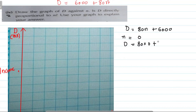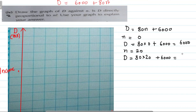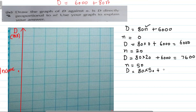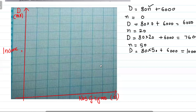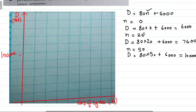So D equals 80N plus 6,000. When N=0, value is 6,000. When N=20, value is 80 times 20 plus 6,000, which equals 7,600. When N=50, value will be 80 times 50 plus 6,000, which equals 10,000. So our values are: N=0 gives 6,000; N=20 gives 7,600; N=50 gives 10,000.